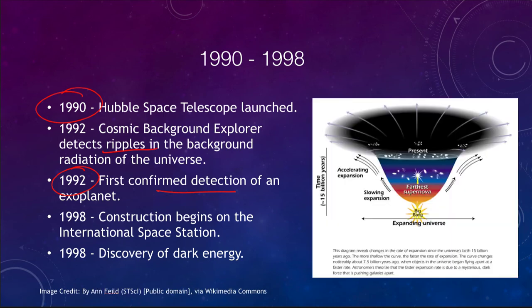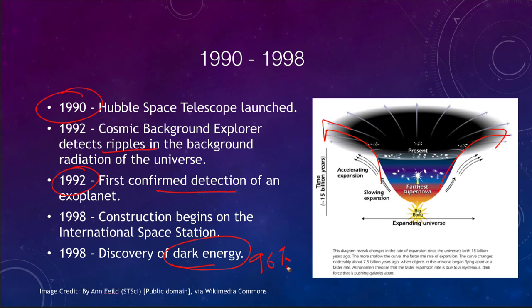Also in 1998, we made the discovery of dark energy. Dark energy was found to be causing the expansion of the universe to accelerate — meaning velocities were slower in the past and are getting faster and faster into the future. This discovery showed that dark energy, along with dark matter, makes up about 96% of the mass and energy in the universe.